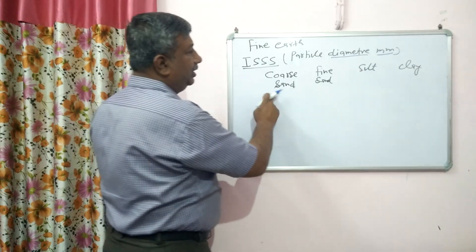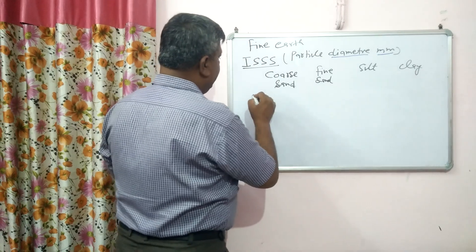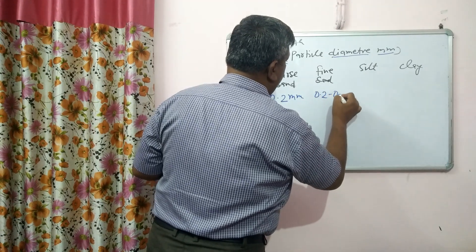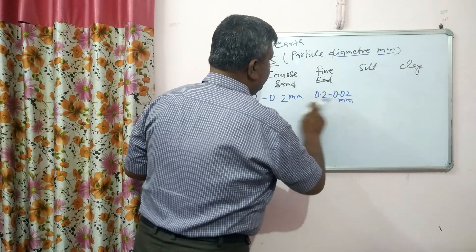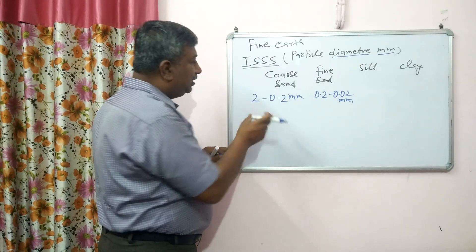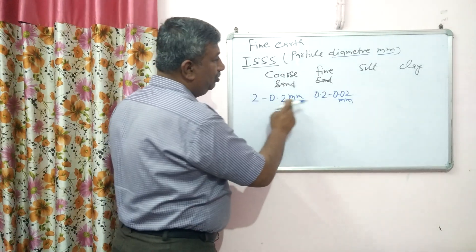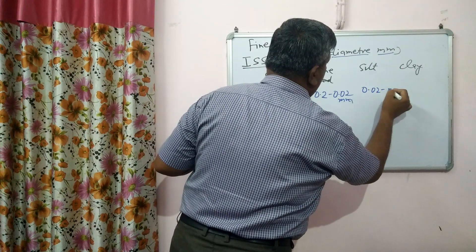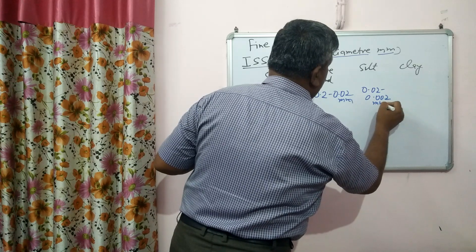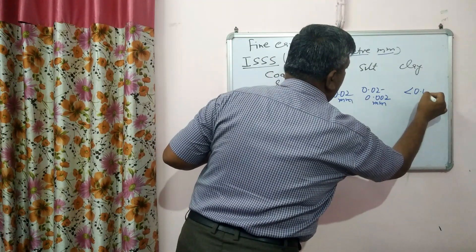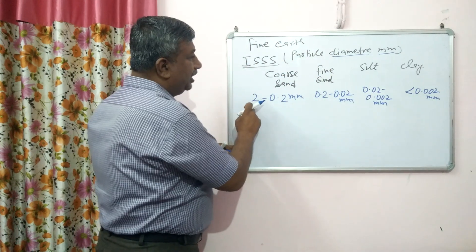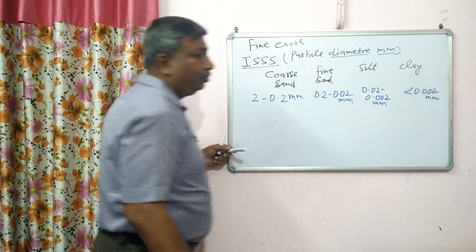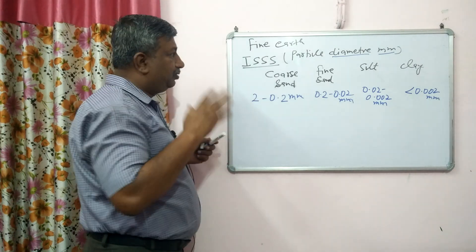In the case of coarse sand, the particle size is 2 to 0.2 mm. And in the case of fine sand, it is 0.2 to 0.02 mm — reduced by 10 times. So remember, this division is a 10-times reduction: starting at 2, then 0.2, then 0.02. Clay is less than 0.002 mm. So this is the first system of classification — the International Society of Soil Science.